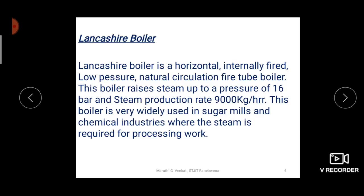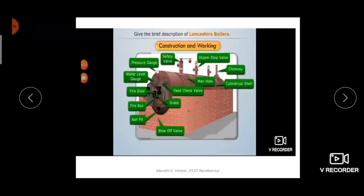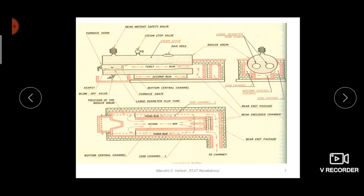Due to these characteristics, Lancashire boilers are mainly used in sugar mills and chemical industries, where steam is required for processing work. This is the 3D diagram of the Lancashire boiler. Since it has a cylindrical structure, all the inner parts are not visible. That's why I will first show the 2D diagram — the top view, front view, and side view.